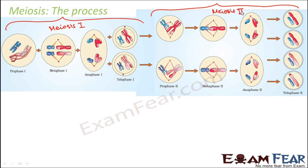The process basically starts with prophase 1, where a lot of major significant changes take place. In prophase 1, the homologous chromosomes become visible. Here you can see this is one chromosome and this is another chromosome — these two are the two homologous chromosomes. So here the homologous chromosomes start getting visible.